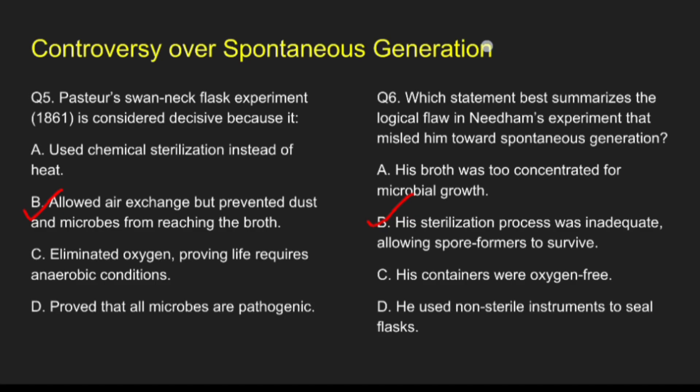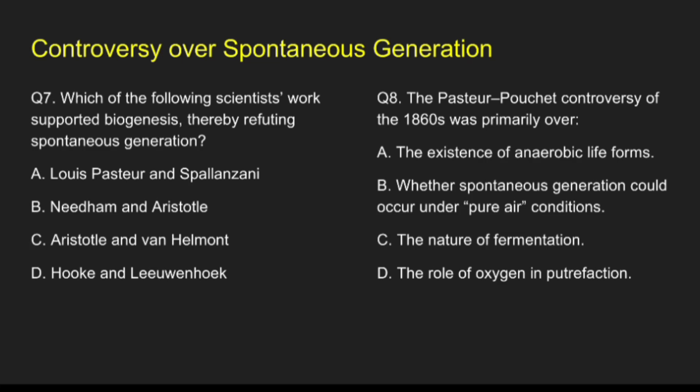Question 7: Which of the following scientists' work supported biogenesis, thereby refuting spontaneous generation? Option A, Louis Pasteur and Spallanzani; Option B, Needham and Aristotle; Option C, Aristotle and Van Helmont; Option D, Hooke and Leeuwenhoek. The correct answer is option A, Louis Pasteur and Spallanzani.